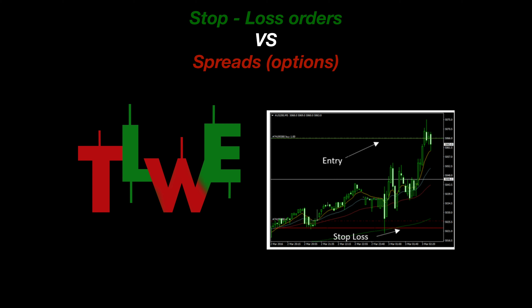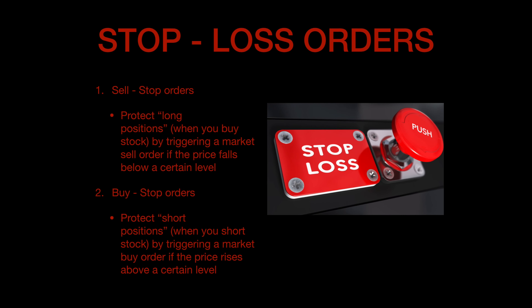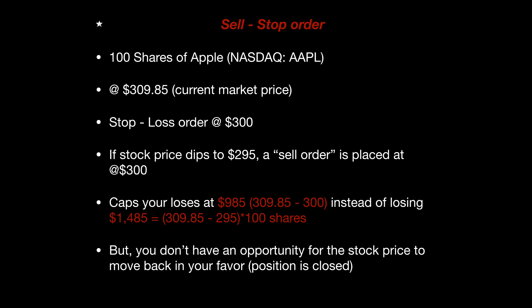I just want to quickly walk you through what a stop loss order is, and we're going to compare that with spreads when it comes to trading options. A stop loss has two types: a sell stop order and a buy stop order. Your sell stop order protects your long positions by triggering a market sell order if the price falls below a certain level. Your buy stop orders protect your short positions by triggering a market buy order if the price rises above a certain level.